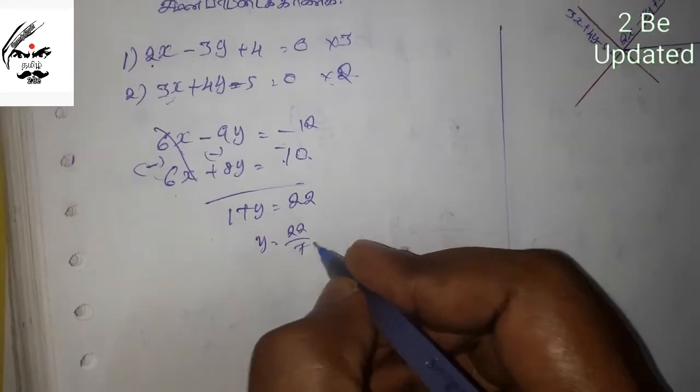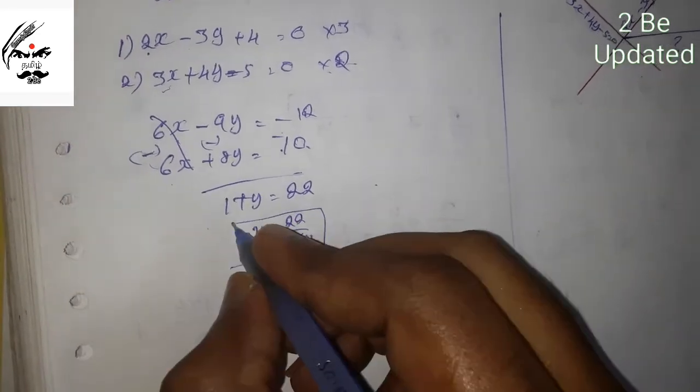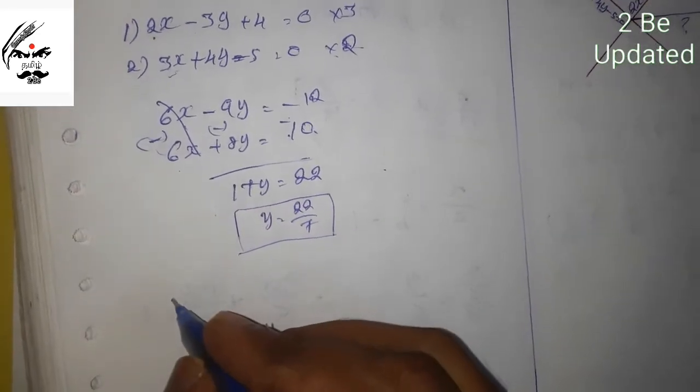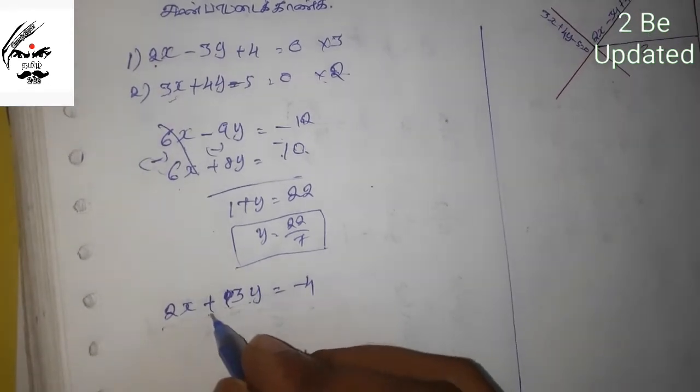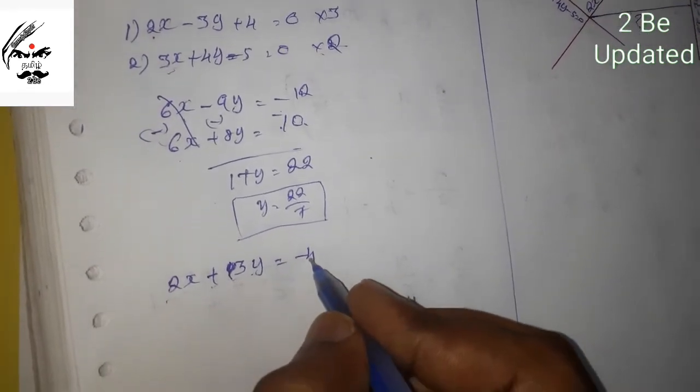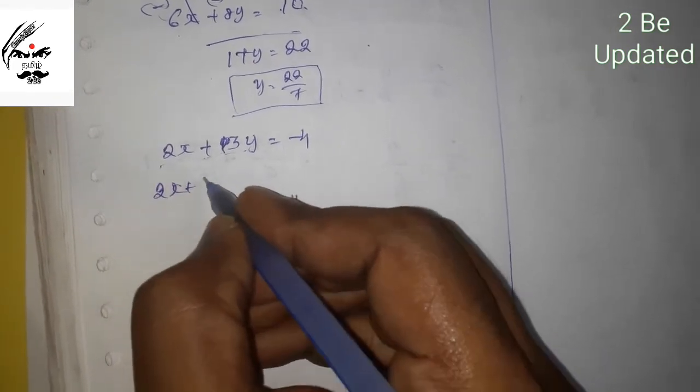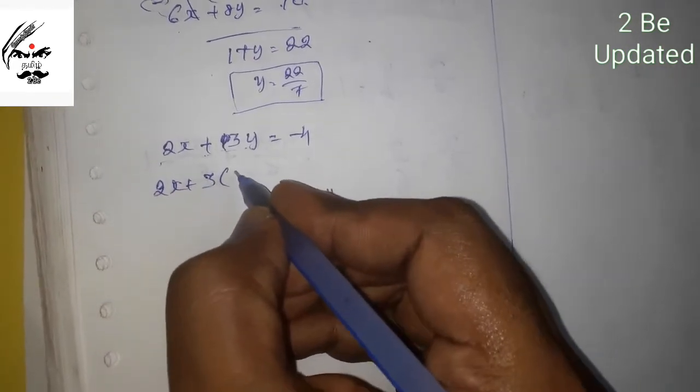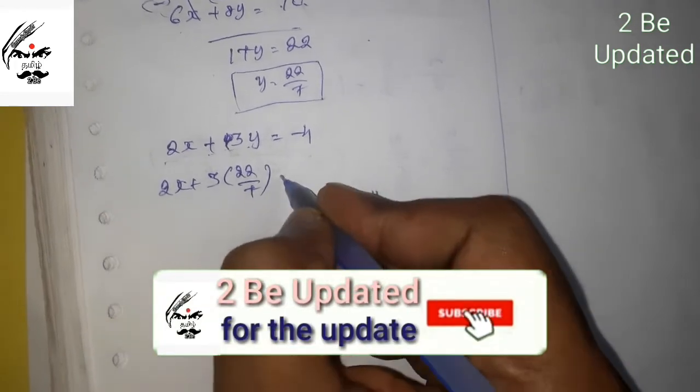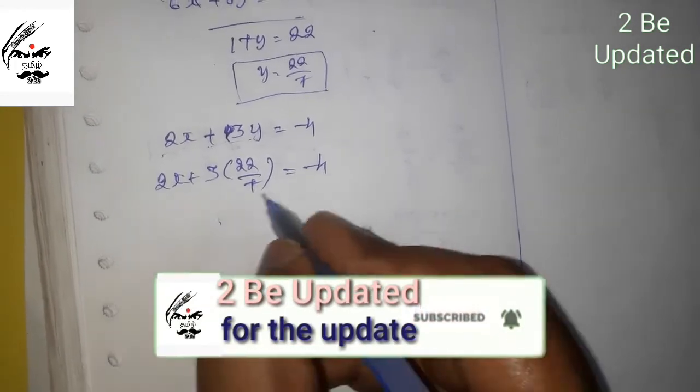Now using the substitution method, take the first equation: 2x plus 3y is equal to minus 4. Substituting y equals 22 by 17.